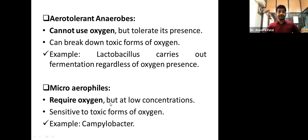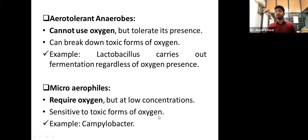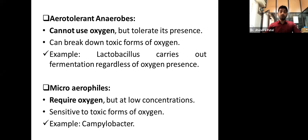The next category is microaerophiles. Microaerophiles require oxygen, but at low concentration. If the concentration increases, it will be problematic for them. They are very sensitive to the toxic form of oxygen. If oxygen is at low concentration, they can utilize it. Example: Campylobacter.